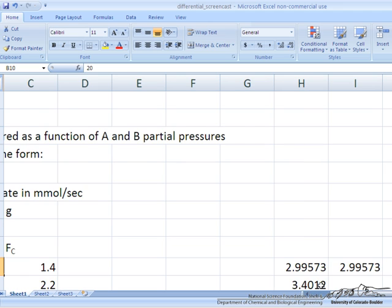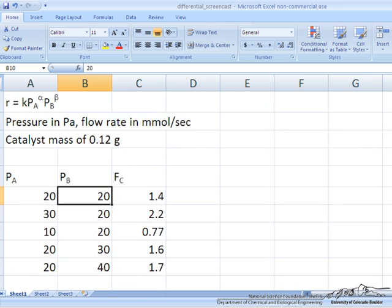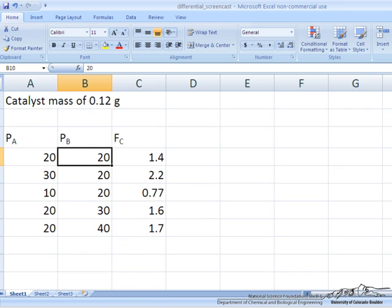And so we've determined alpha and beta, and now all we need to determine is the value of k, and there are a number of ways to do this. Let me just show you a way to do this here.